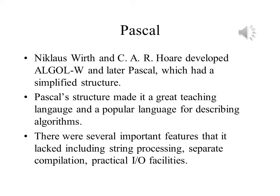Wirth and Hoare developed the Algol W compiler and later developed Pascal. Pascal's structure and smaller size made it a great language for teaching introductory programming. It was also used to illustrate algorithms. At the same time, it lacked many features that programmers would normally want in a programming language. There was no string type, although you could set up arrays of characters. Separate compilation was not possible, and its input-output facility was not that powerful. Over the years, there were extensions of the Pascal language created that addressed these concerns.